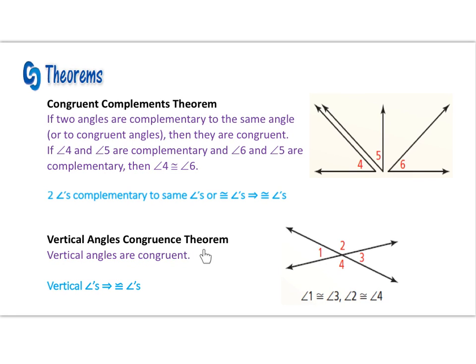Next we have our vertical angles congruence theorem, which states vertical angles are congruent. We've actually talked about this already, so we're seeing this again as a formal theorem. Vertical angles implies congruent angles. So angle 2 is congruent to angle 4, and angle 1 is congruent to angle 3, because they are vertical angles. These are conclusions we can make just by looking at a diagram.